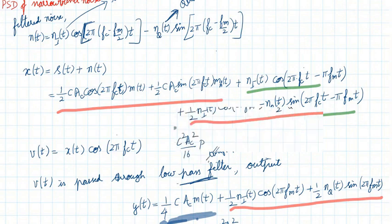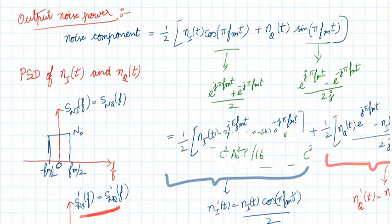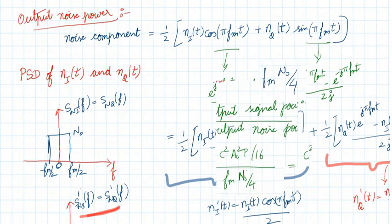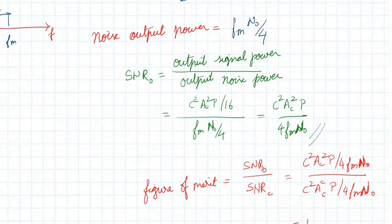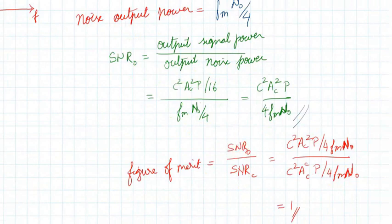The figure of merit is SNR_o divided by SNR_c. We computed SNR_c = c²Ac²P/(4·fm·N0) and SNR_o = c²Ac²P/(16·(fm·N0/4)), which are the same value, giving a figure of merit of 1. This is the same result as for double sideband suppressed carrier with coherent detection. A figure of merit of 1 is a good result.